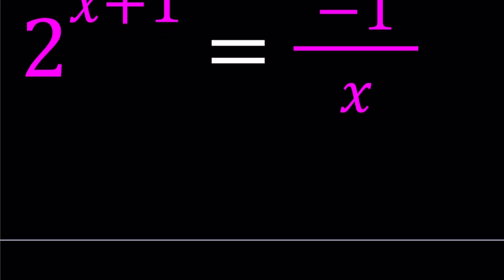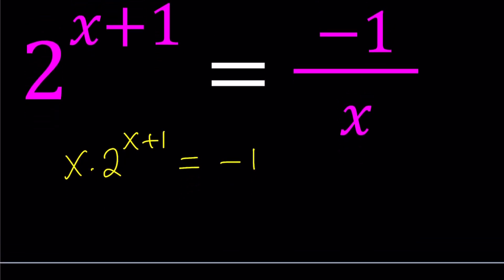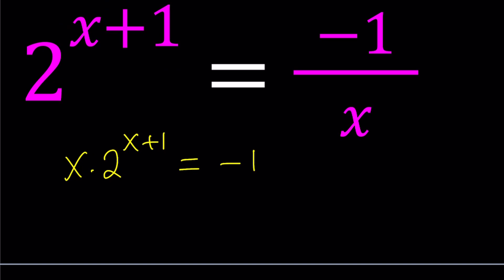Let's start by cross-multiplying, and write this as x times 2 to the power x plus 1 equals negative 1. My goal here is to use Lambert's W function to solve this problem. I'm going to show you how that works real quick, and find all the solutions.